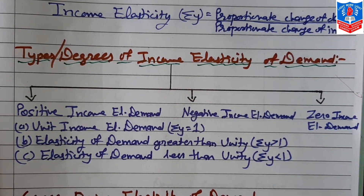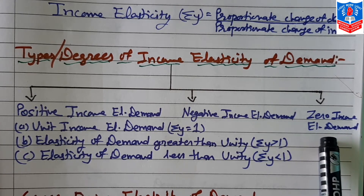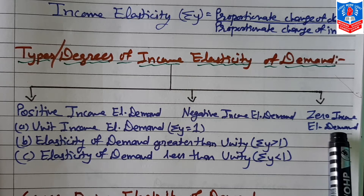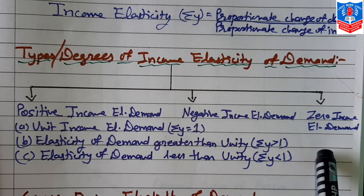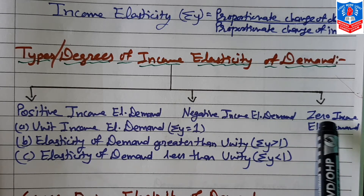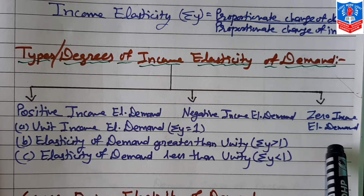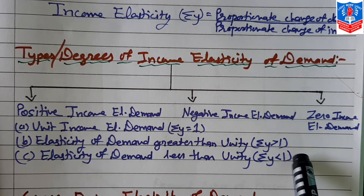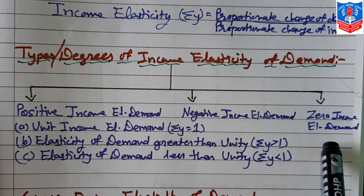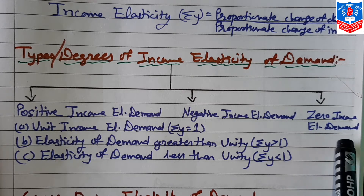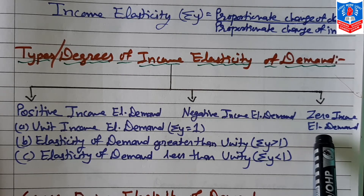The last type is zero income elasticity of demand. When the demand for goods remains unchanged with a change in consumer income, it is known as zero income elastic demand. Usually, very cheap or low-price goods like salt, postcards, pins, match boxes, matchsticks, and stapler pins show zero income elastic demand — whether income increases or decreases, demand for these remains constant.